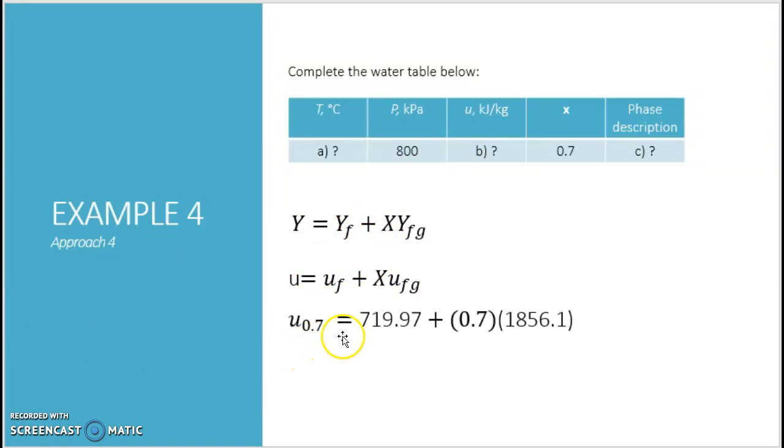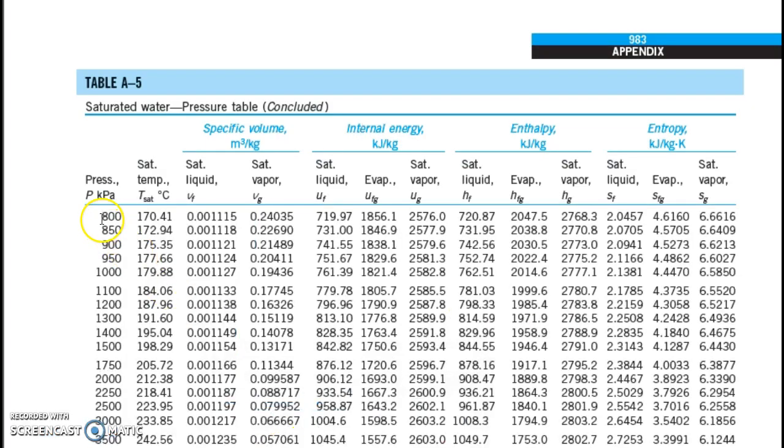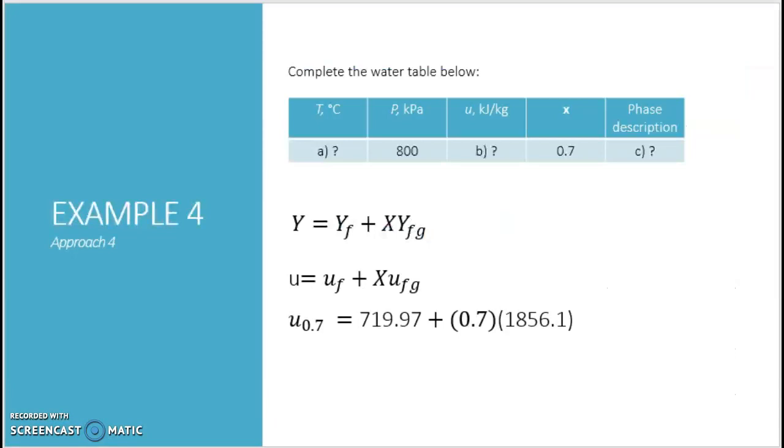And we already obtained this UF and UFG from your property table here at 800. So your UF and UFG is this much. So we substitute into this equation. And finally, you are going to have your U at this point 0.7 is 2019.24 kJ per kg.